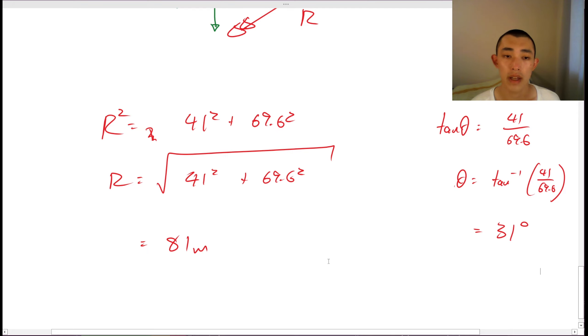And that's our final answer. 81 meters at 31 degrees. So 81 meters at 31 degrees below horizontal.